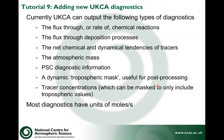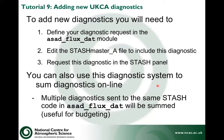You can output the following types of diagnostics: flux through chemical reactions, flux through deposition processes, net chemical and dynamical tendencies of tracers, atmospheric mass, information about PSCs, a tropospheric mask you can use for post-processing, and tracer concentrations which you can mask off — so if you just wanted the tropospheric amount, for instance. Generally, these have units of moles per second. To add a new diagnostic, you define it in the ASAD flux module, edit the STASH master file to include the diagnostics, and then request the diagnostic in the STASH panel. You can also sum diagnostics online — if you had a load of reactions and wanted the flux through all of them as one thing, you can add them up. But you need to be careful not to accidentally send two things to the same STASH code, because then they'd just be added together.